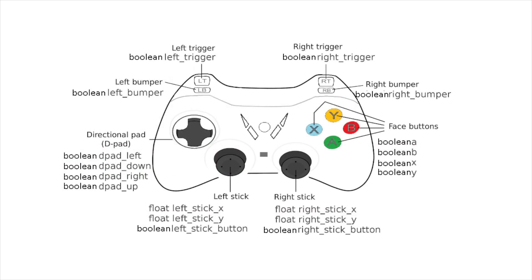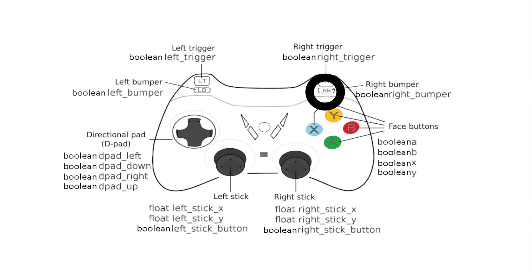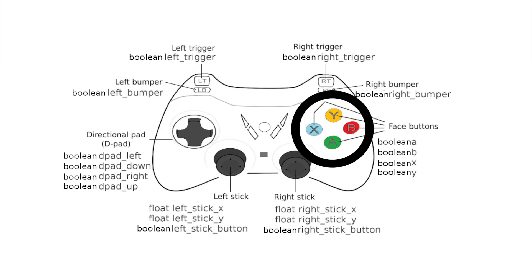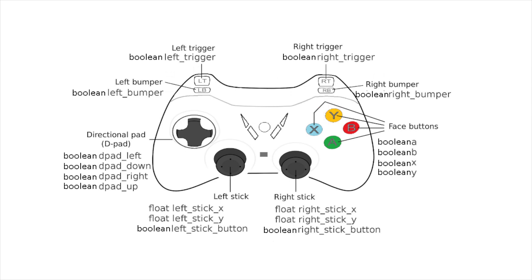There are many different buttons on the gamepads. For First Global teams, we have the left trigger, the right trigger, the left bumper, the right bumper, the d-pad left, right, down, and up, as well as the face buttons A, B, X, and Y, as well as the left stick button and the right stick button. Those are all boolean values.